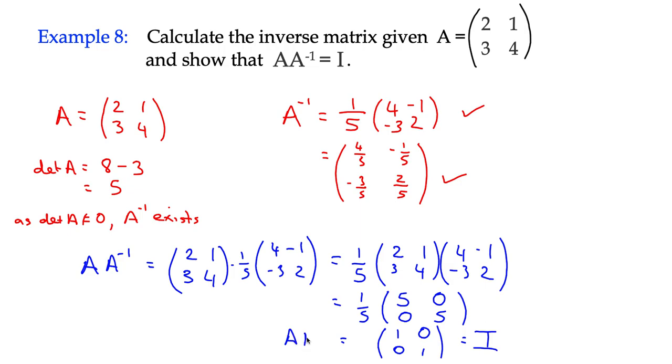So A times its inverse gives you 1, 0, 0, 1, which is equal to I, which is the whole point. Any matrix multiplied by its inverse should give us the value 1, or in our case, the unit matrix.